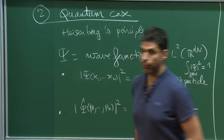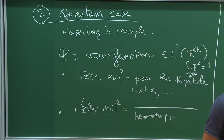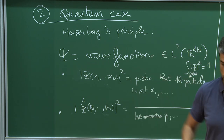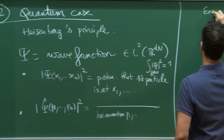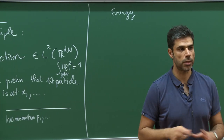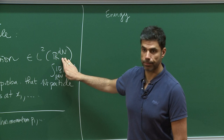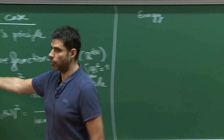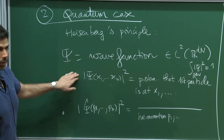If you take the Fourier transform of ψ and take the square, that is the probability that the first particle has momentum p_1, and so on. ψ is the link between the probability for momenta and for positions — that's the Heisenberg principle. The state of the system is no longer a point in R^{2dN} but a function in L²(R^{dN}). We went from finite dimension to infinite dimensions, and ψ is now the state of our system.